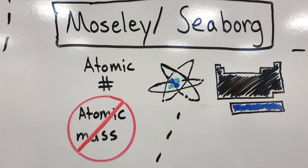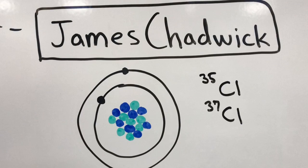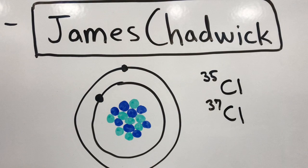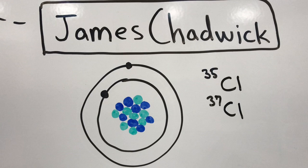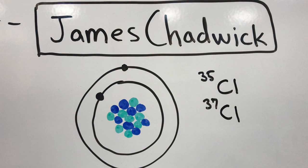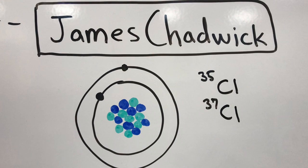James Chadwick was one of the next scientists to order and change the periodic table. Chadwick discovered isotopes with his research on neutrons and was able to further make the table more accurate in its atomic numbers. All of these scientists worked together to give us the periodic table which we know today.